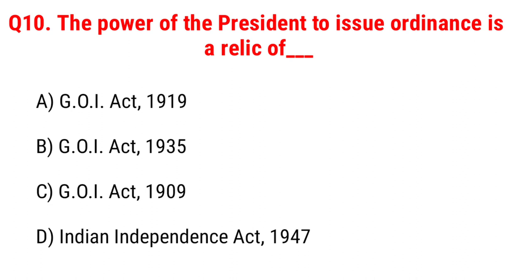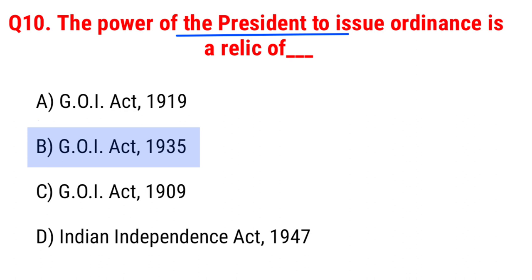Next question: the power of the President to issue an ordinance is a relic of Option A, Government of India Act 1919; B, Government of India Act 1935; C, Government of India Act 1909; D, Indian Independence Act 1947. The right answer is Option B, Government of India Act 1935.